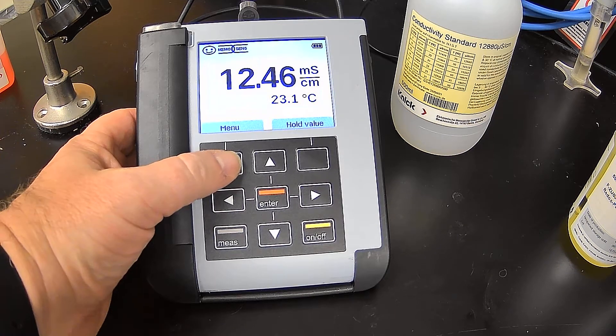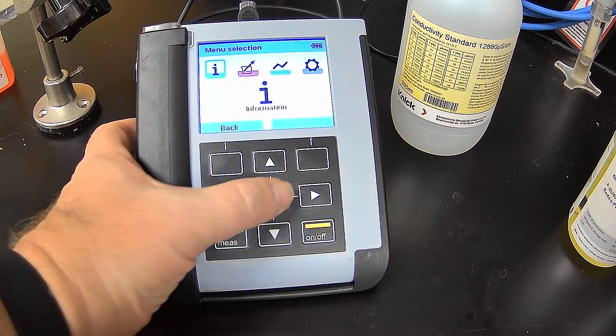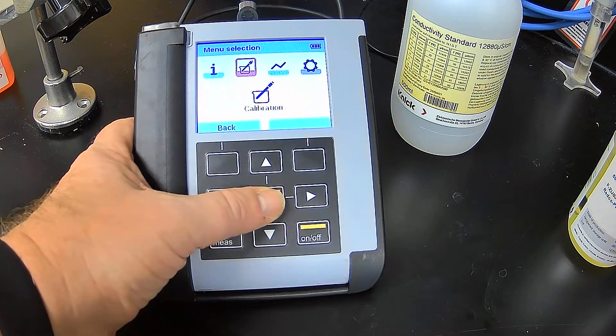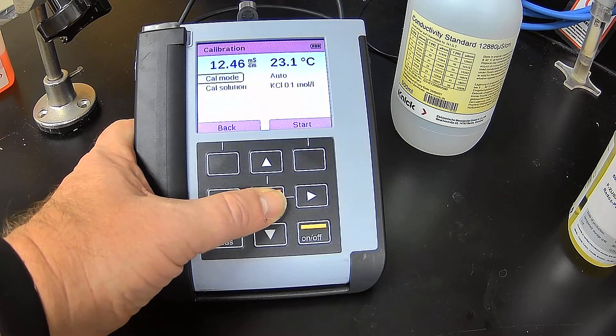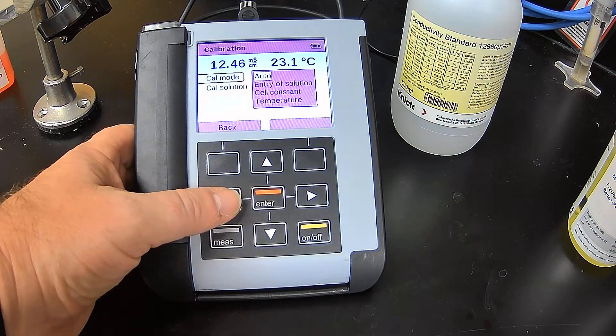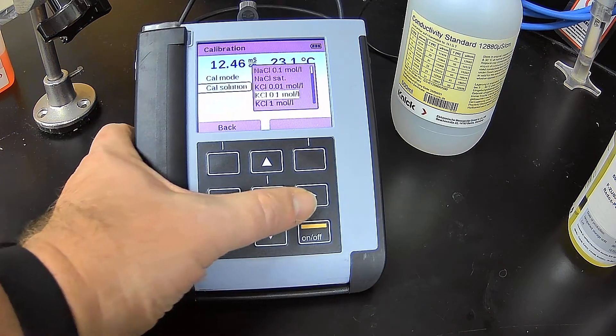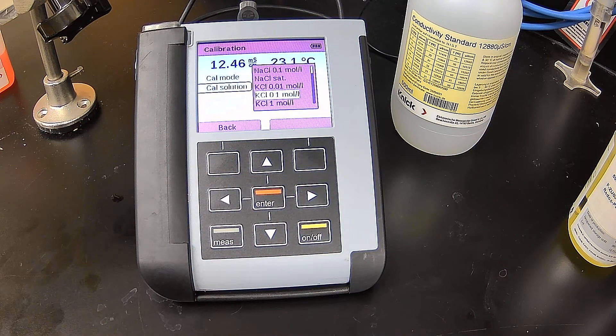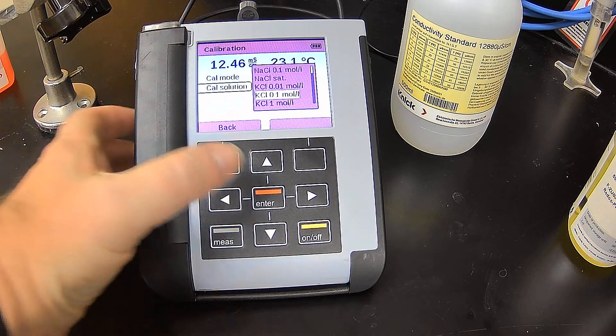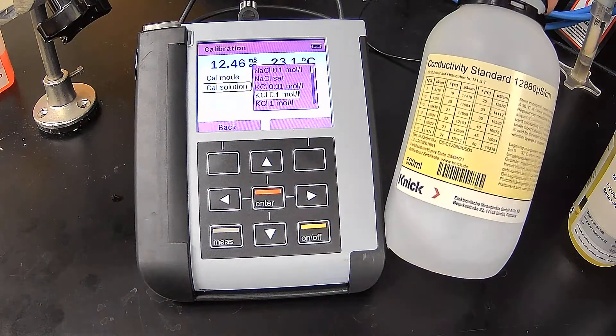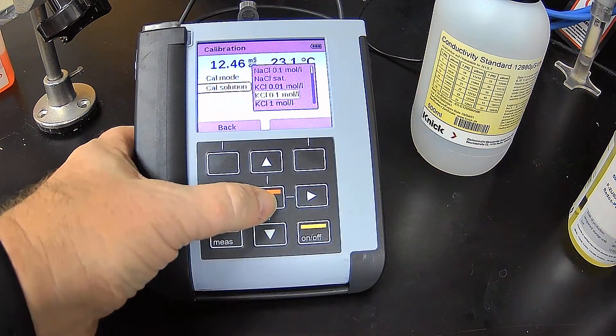So here if I hit menu and the right arrow until I see calibration, I hit enter. I've got it set up for auto calibration mode, and then I had to select the type of conductivity standard. This is a KCL solution, or potassium chloride 0.1 molar, and that is the correct one based on this standard that I'm using.